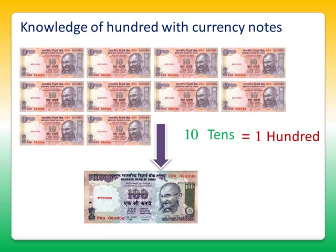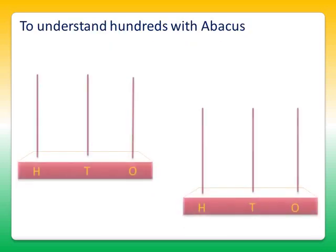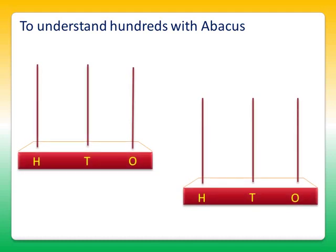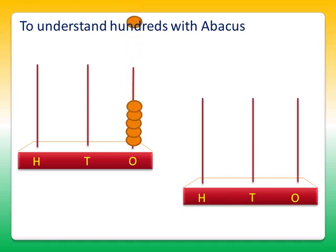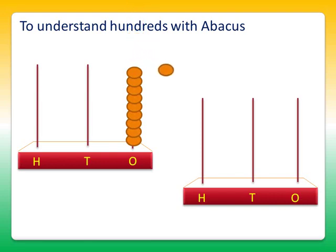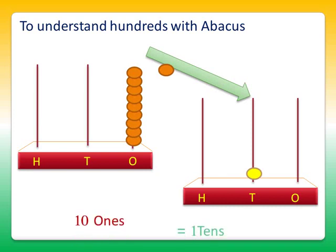Now let's understand the concept of 100 with abacus. Let's put some beads in the one's stick. It's 1, 2, 3, 4, 5, 6, 7, 8, 9. Since we cannot put the 10th bead in the one's abacus stick, we put 1 bead in the ten's stick instead of putting 10 beads in the one's stick. And remember, we do this by removing all the beads from the one's stick. So 10 ones are equal to one ten.